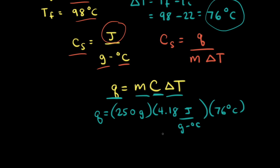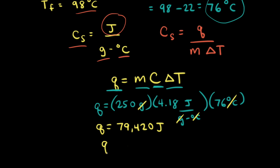The grams and degrees Celsius cancel out, giving Q = 79,420 joules. To two significant figures, Q = 7.9 × 10⁴ joules. So 7.9 × 10⁴ joules of energy must be transferred to the water to increase its temperature from 22 degrees Celsius to 98 degrees Celsius.